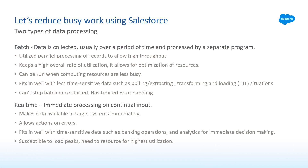There are two types of data processing: batch and real-time. Batch is when data is collected over a period of time and processed by a separate program. It utilizes parallel processing to allow for high throughput, is heavy on computer resources so it's usually run off hours overnight, and fits well with less time-sensitive data such as extract, transform, and load situations. The downfalls are that once you start a batch you can't stop it due to data integrity reasons, and it has very limited error handling.